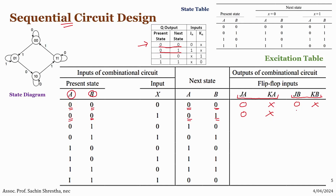For A going zero to one, the excitation is 1X. For B going one to zero, the excitation is X1. For A going zero to zero it is 0X, and for B going one to one, the excitation is X0.